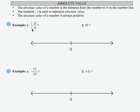Let's see how that works in the examples below. The first one, the absolute value of negative 2/3. I'm going to plot negative 2/3 on the number line here. The distance that negative 2/3 is from zero is 2/3. Distance is always positive, therefore the absolute value of negative 2/3 is 2/3.